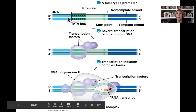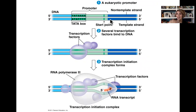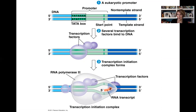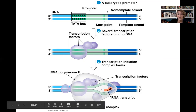So this is initiation. We have our DNA non-template strand and our DNA template strand, which is the strand that the messenger RNA is going to be built upon. The transcription factors — these purple things — help guide RNA polymerase II, the major enzyme for eukaryotic transcription, to sit right where it needs to on the DNA to begin transcribing a new messenger RNA strand using the template strand as its guide.